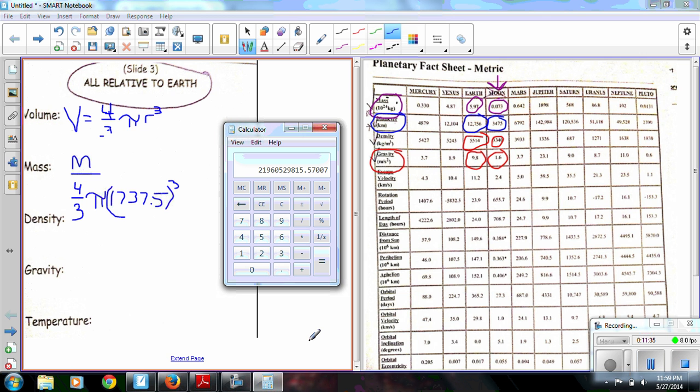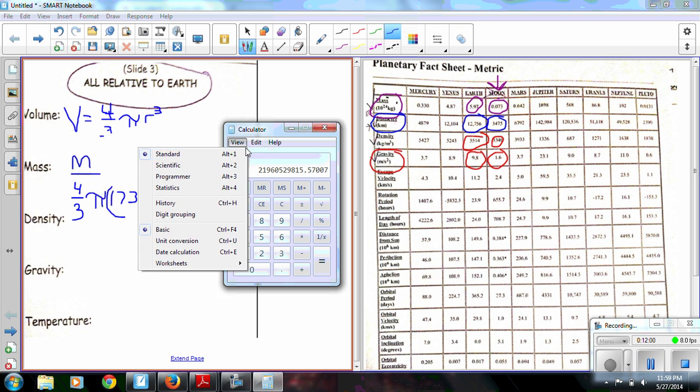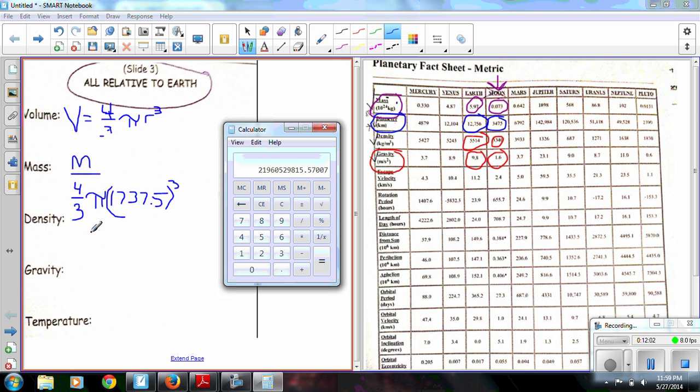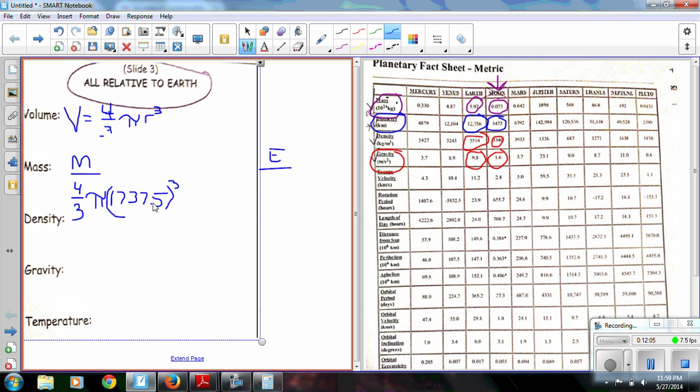4 thirds, you can use your calculator and do 4 divided by 3 to get 4 thirds, or it is 1.33333. Okay, all right, so this is the answer I get. Okay, it's a really long answer it looks like here. I have digits 21960529815.57. I actually, when I looked at this, I changed it to scientific notation, but we can use this figure right here, too. I'm going to copy that, paste it in there.